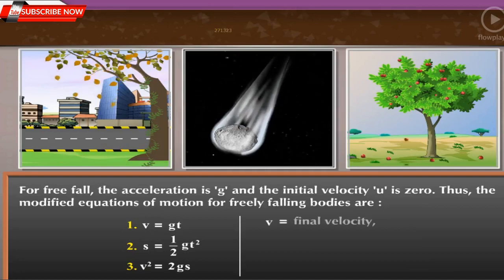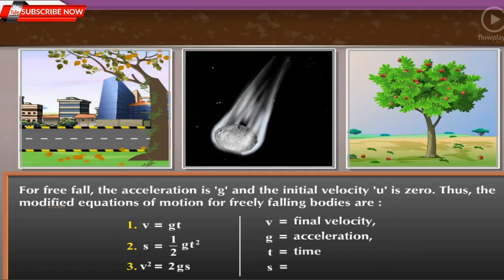Here, v is equal to final velocity, g is equal to acceleration, t is equal to time, and s is equal to distance covered in time t.